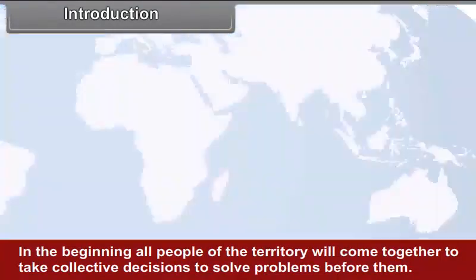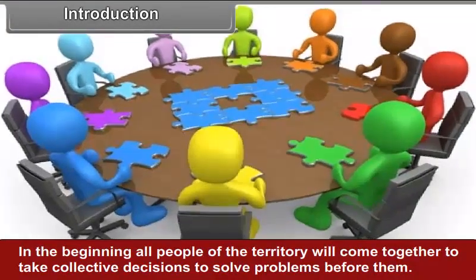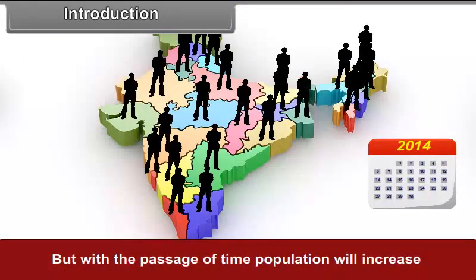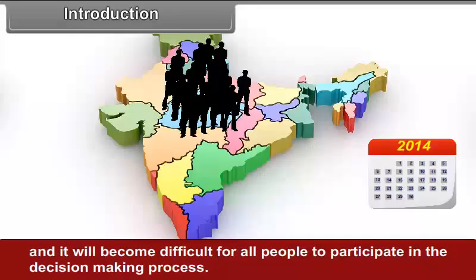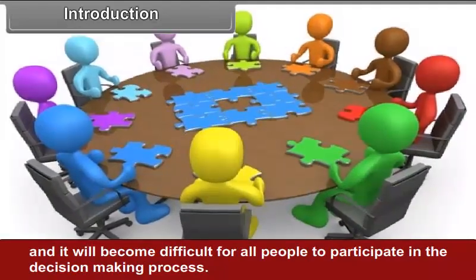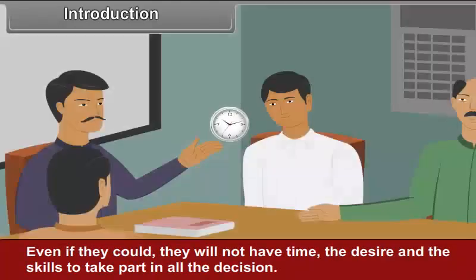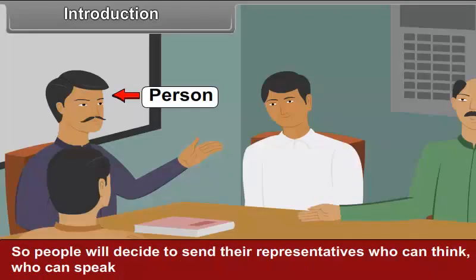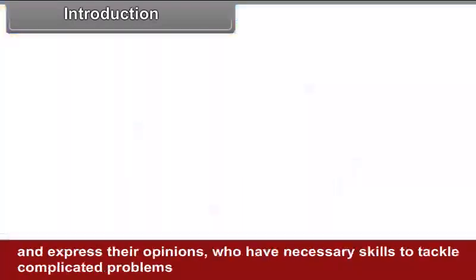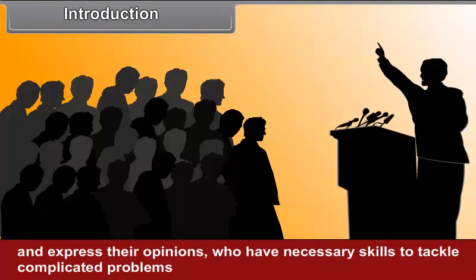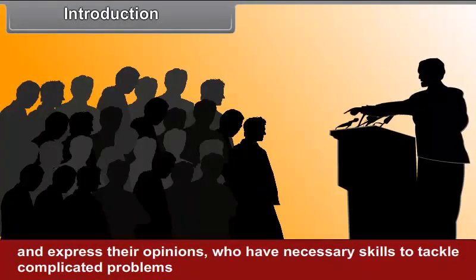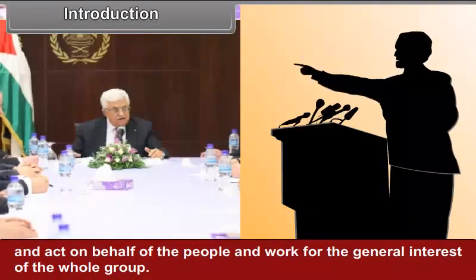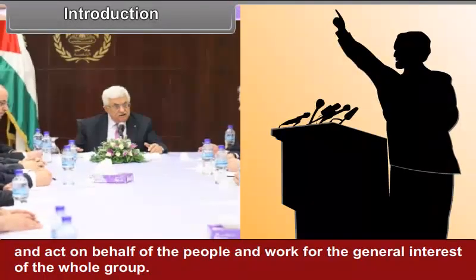In the beginning, all people of the territory will come together to take collective decisions to solve their problems. But with the passage of time, population will increase and it will become difficult for all people to participate in the decision-making process. Even if they could, they will not have the time, desire, or skills to take part in all decisions. So people will decide to send their representatives who can think, speak, and express their opinions, and who have the necessary skills to tackle complicated problems and act on behalf of the people.